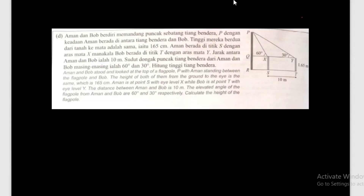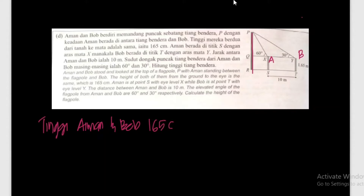Tiang bendera ni adalah P. Dengan keadaan Aiman berada di antara tiang bendera dan Bob. So Aiman kat sini, Bob dekat sini. Tinggi mereka berdiri dari tanah ke mata adalah sama - Aiman dan Bob sama, iaitu satu enam lima sentimeter.